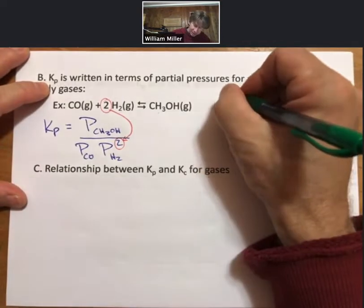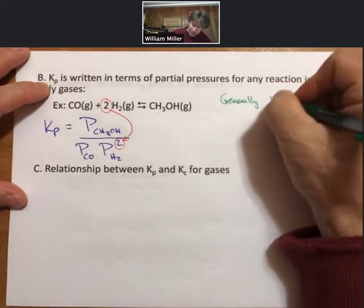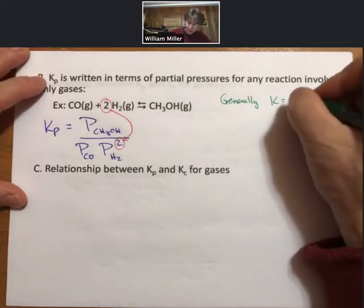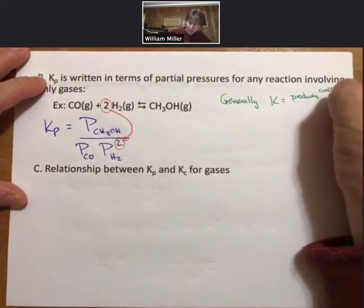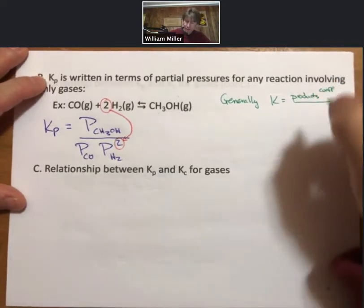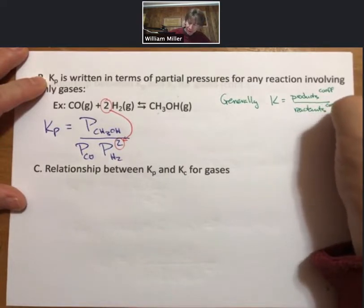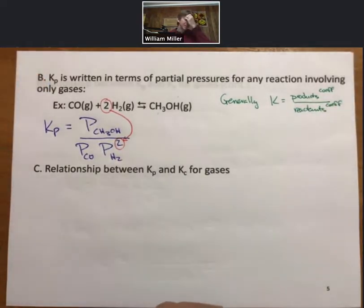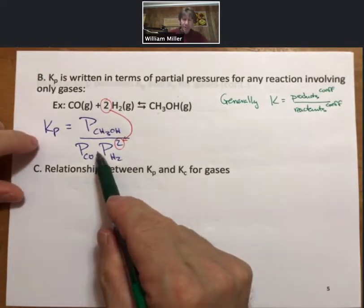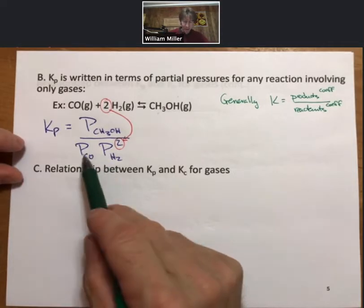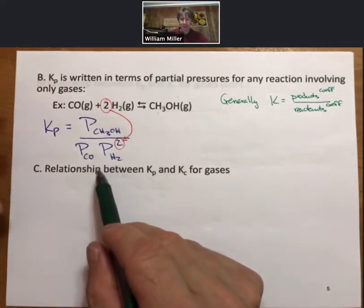Coefficients still exponents, products still in the numerator. So generally, K equals products raised to coefficients over reactants raised to coefficients. And we've seen that twice now. And another thing I'll point out to you is that there's never a plus down here. It's always concentrations or partial pressures multiplied times each other.